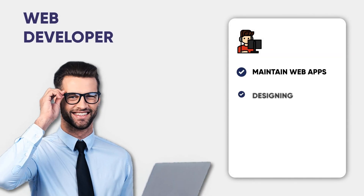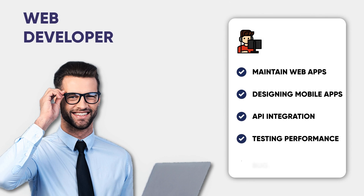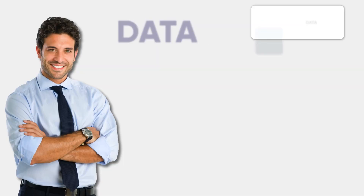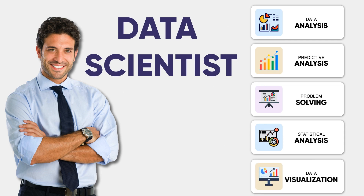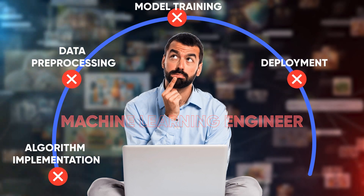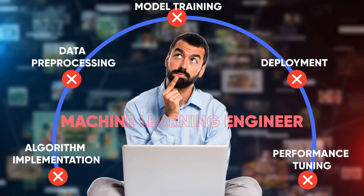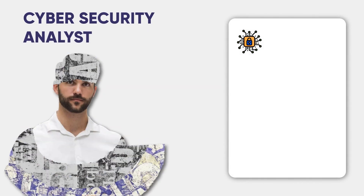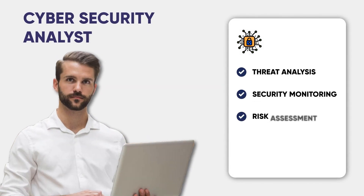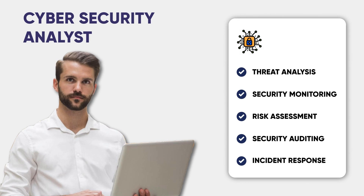Next, we also have the web developer, and they are kind of similar but they maintain web applications specifically. Those who design applications specifically for mobile are, surprisingly, called mobile developers. There are also data scientists and data analysts, and they basically analyze or use data to uncover insights, trends, and patterns using different techniques. You can also become a machine learning engineer and work specifically with algorithms and systems to enable machines to learn and make decisions from data. Cybersecurity is also in really high demand right now, with cybersecurity analysts and engineers protecting systems and networks from threats.